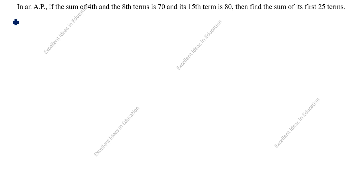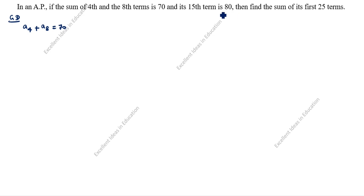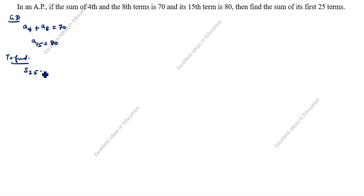What is given in this question? Sum of 4th term and 8th term: A4 plus A8 is equal to 70. And its 15th term is 80, meaning A15 is equal to 80. What we need to find: find the sum of its first 25 terms, so we need to find S25.